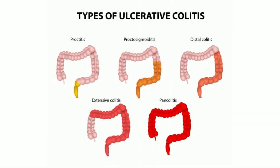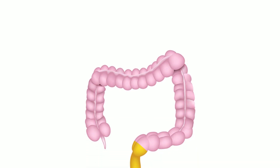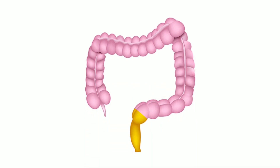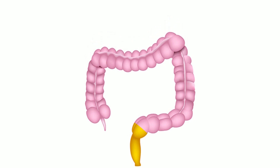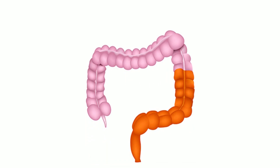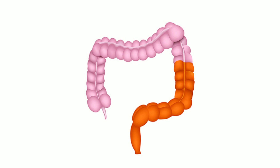The type of ulcerative colitis you have is determined by its location in the body. The most prevalent kinds are pan colitis, ulcerative proctitis, proctosigmoiditis, and left-sided colitis. Ulcerative proctitis is the mildest kind, typically affecting only the rectum — the section of the colon closest to the anus — and rectal bleeding may be the only symptom.